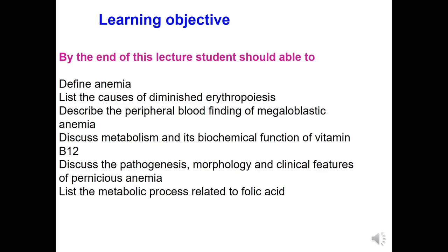When we complete, you will be able to define what is anemia, list the causes of diminished erythropoiesis, describe the peripheral blood findings, discuss the metabolism and biochemical function of vitamin B12, discuss the pathogenesis, morphology and clinical features of pernicious anemia, and list the metabolic processes related to folic acid.